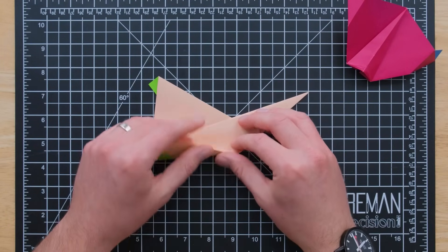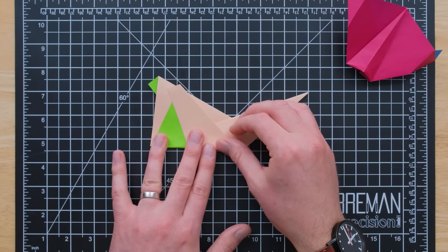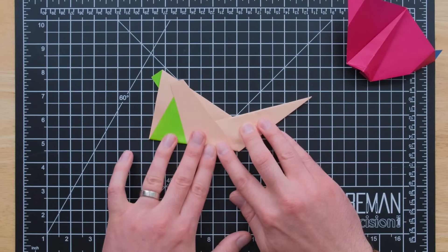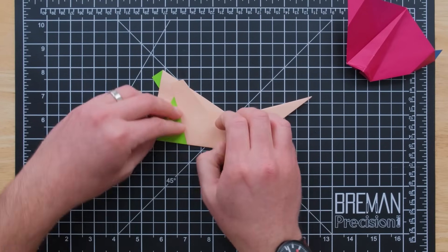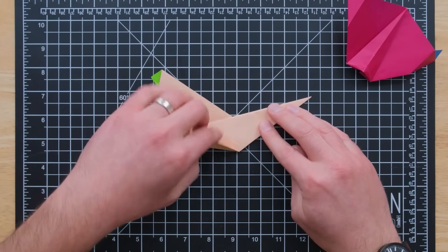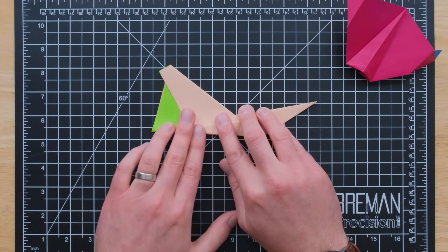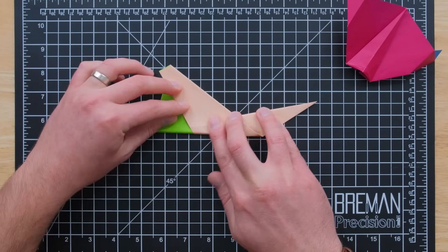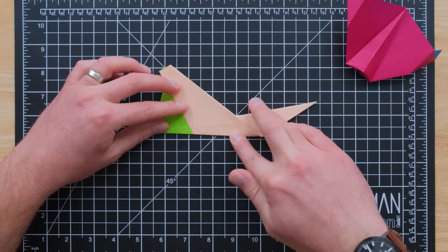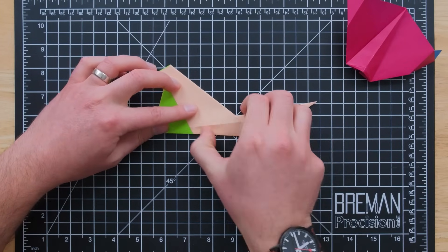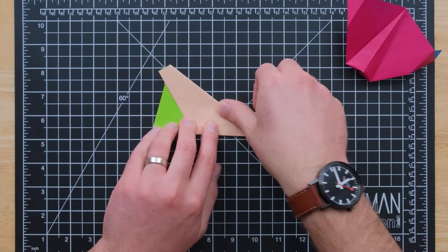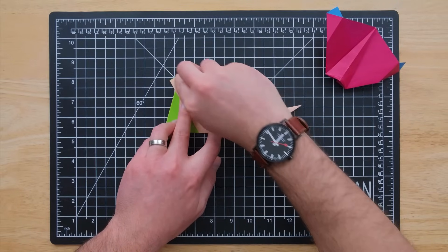Flip it over and we'll repeat on this side. So we fold to that back corner to that first crease line, sort of in the middle of the paper, and then to that second crease line a little bit further up. And you can use the other wing that you just folded as a way to match. Make sure everything's nice and even on both sides.